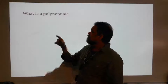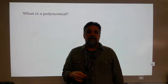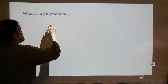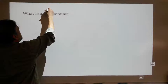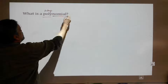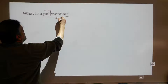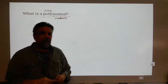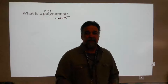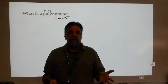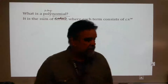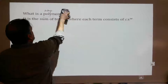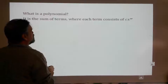First, what's a polynomial? Well, polynomial — poly means many, and nominal means numbers. So it's many numbers. Polynomials are really a lot like numbers. They act sort of like numbers. But what are they in particular? It's the sum of terms.